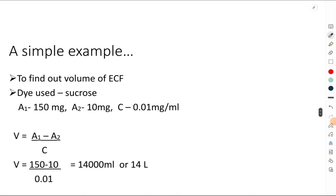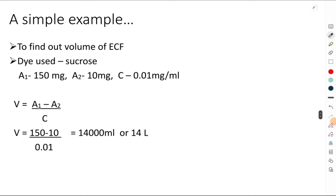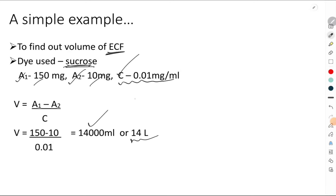For example, to find out the volume of the extracellular fluid using the dye sucrose: A1 = 150 milligrams injected, A2 = 10 milligrams excreted or metabolized, and the concentration achieved in the extracellular fluid is 0.01 milligrams per ml. Putting all these values gives the volume of the extracellular fluid as 14,000 ml or 14 liters. That's why ECF is also called as the sucrose space.